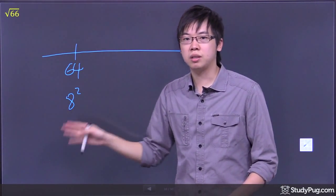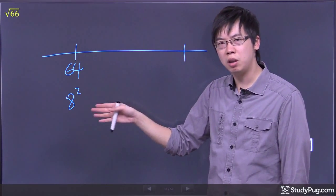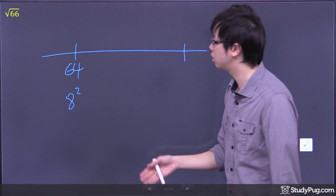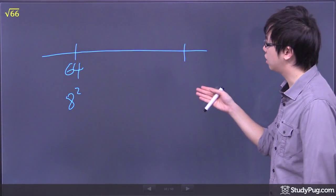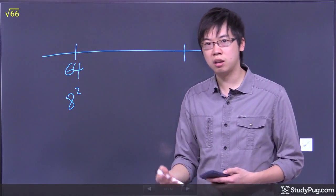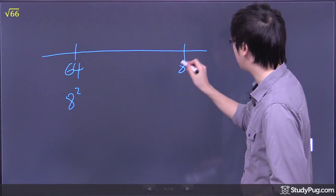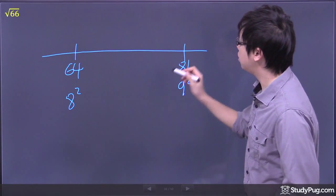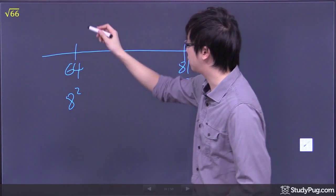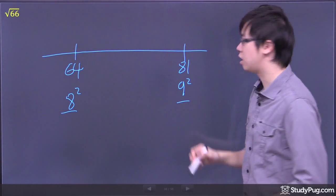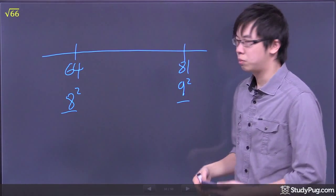So I know the root 66 is definitely greater than 8, but 8 point something which I don't know yet. Then this number here is gonna be, after 8 there's a 9, 9 times 9 is 81, so this is 81 right here. So I know this root 66 is definitely between 8 and the 9. But where is it?